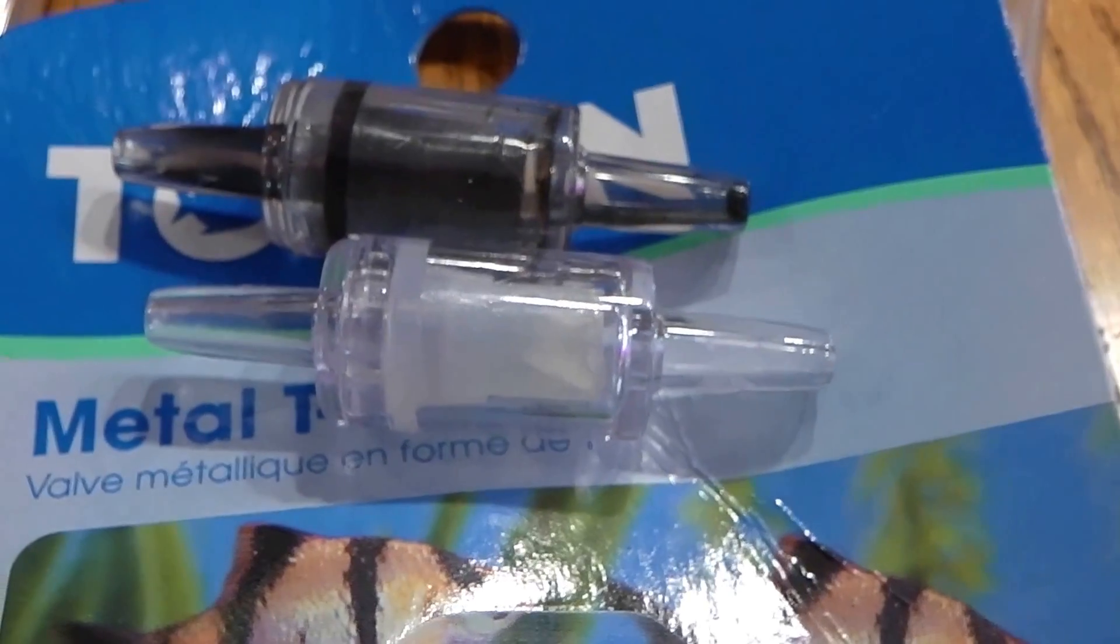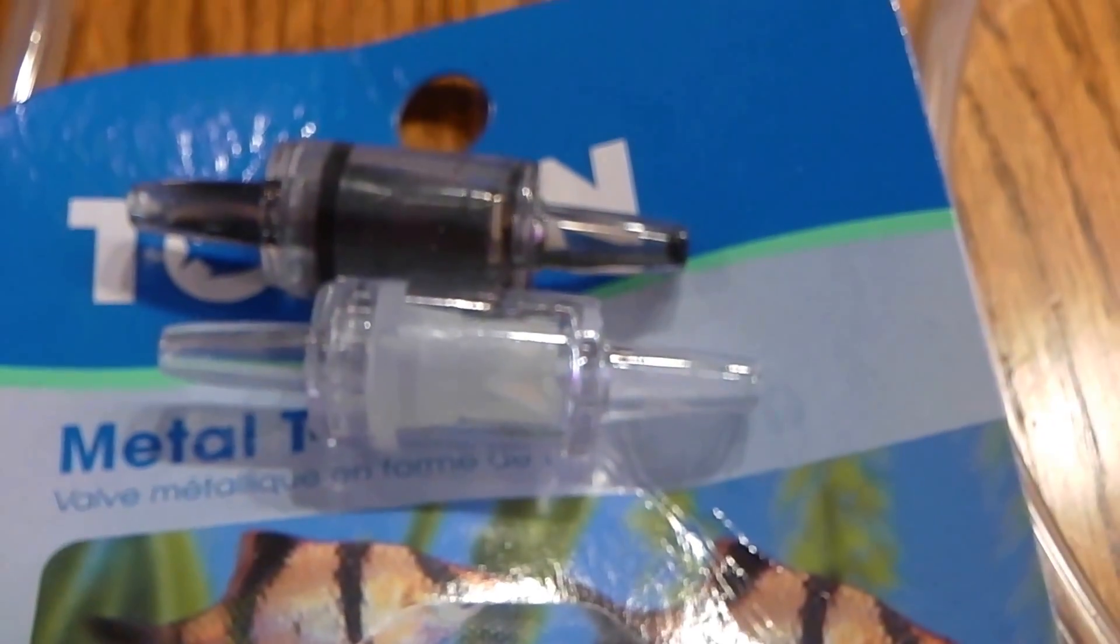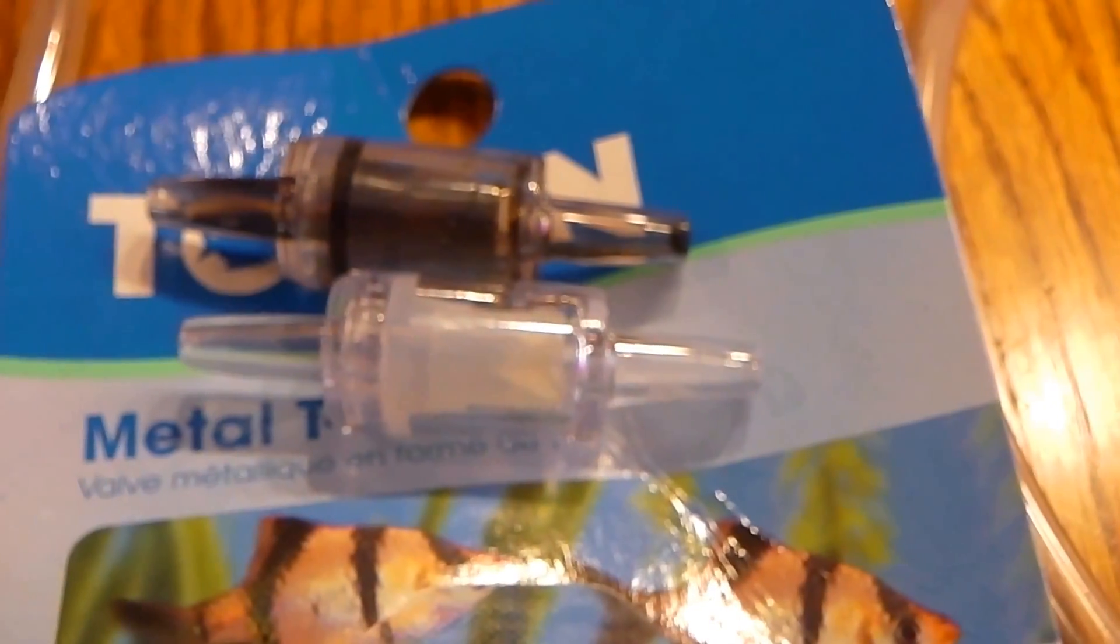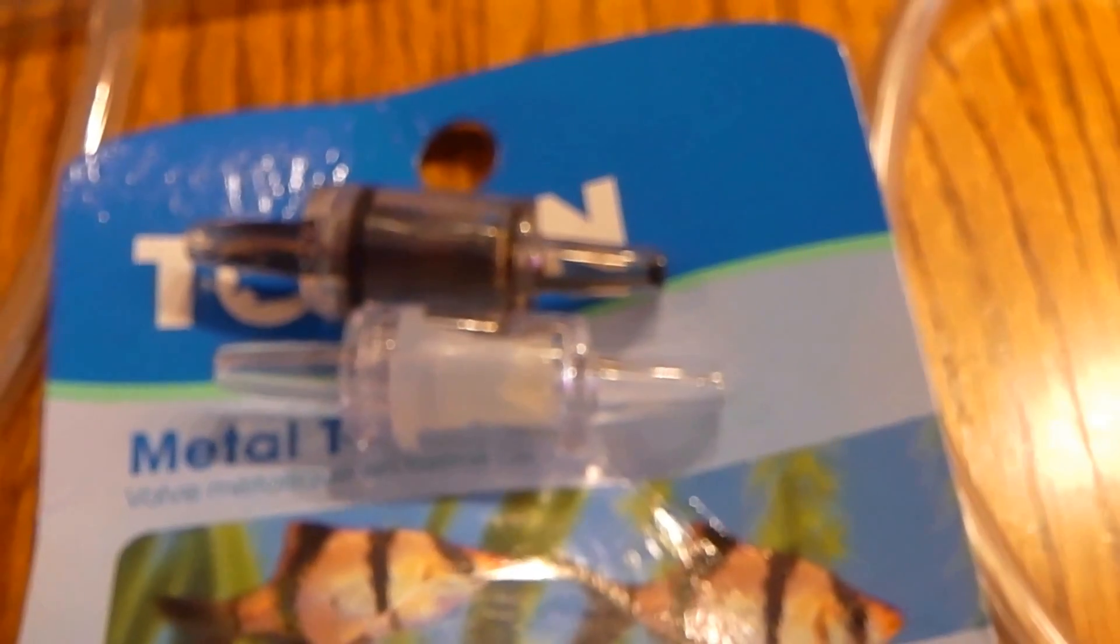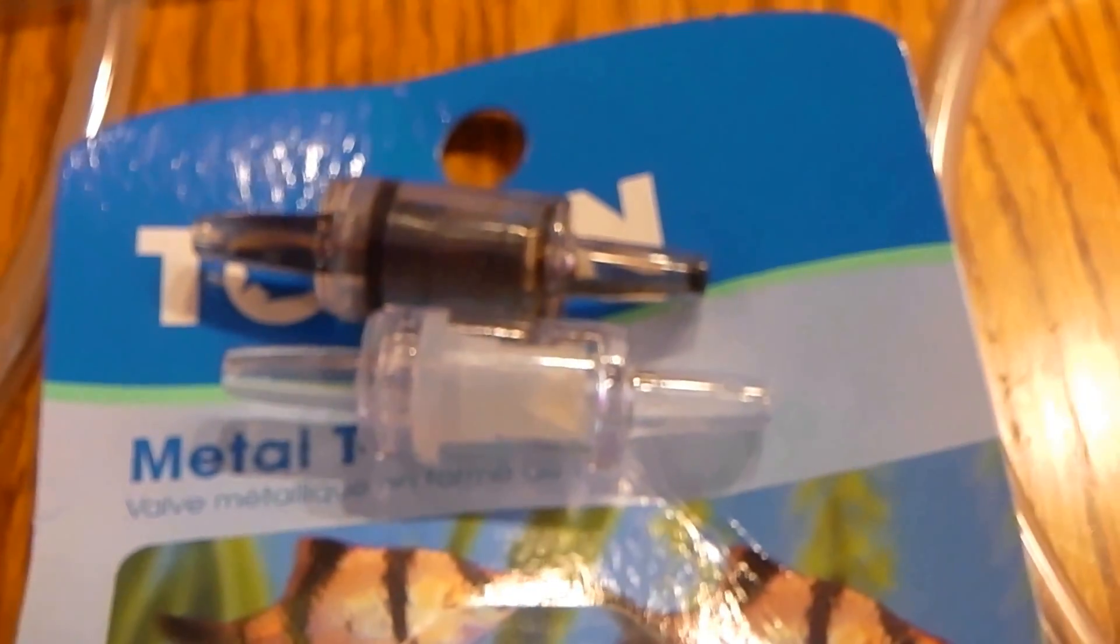And we're also going to be using these little guys, which are check valves. So it allows the air to go one way and the water will not go the opposite direction. So if the pump ever shuts down, you get some sort of siphon effect. These will prevent the water from siphoning back out into your pump.